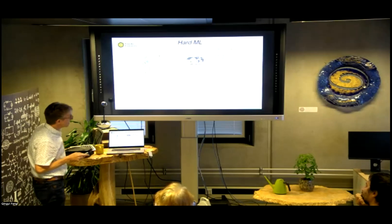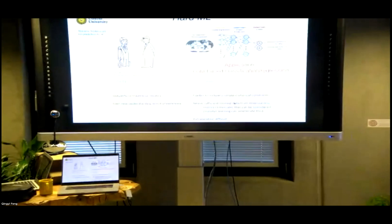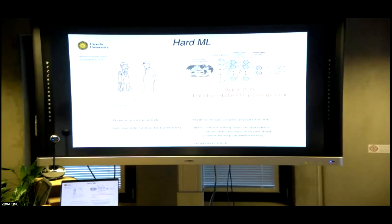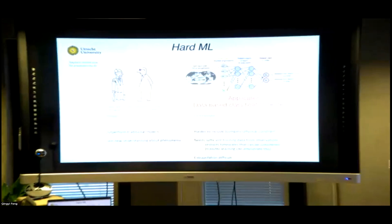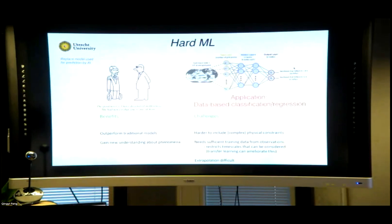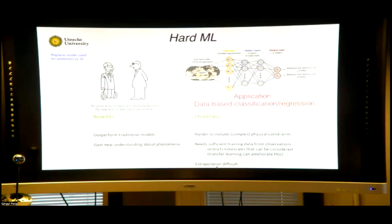A typical problem I gave to students is in climate, where they look at sea surface temperature patterns, do a multilayer perceptron, and classify whether it's an El Niño or La Niña. They train the network, then test it and see whether the neural network generalizes. Of course, extrapolation is always difficult: if phenomena aren't in the training data but are in the test data, the model won't perform well. But this is the hard ML way.